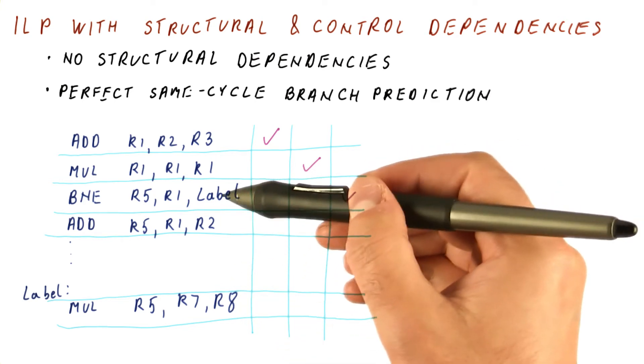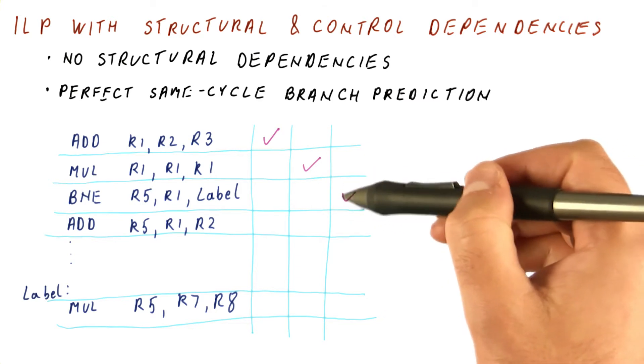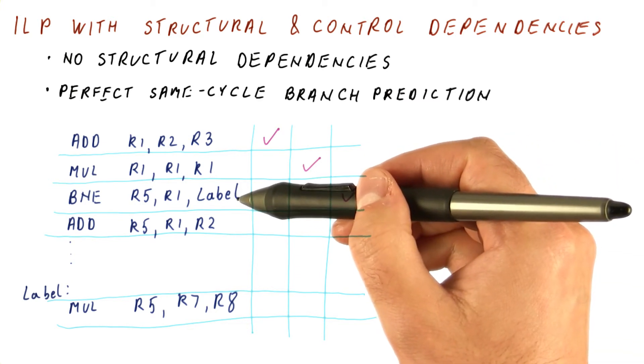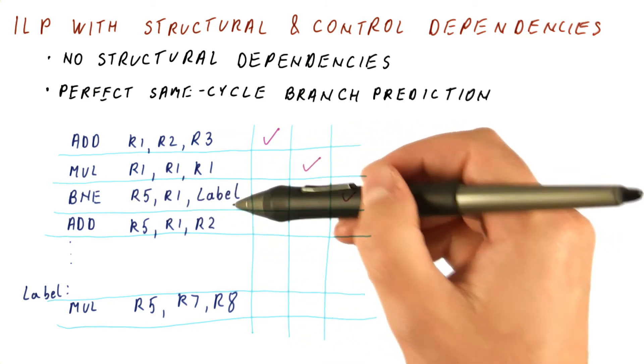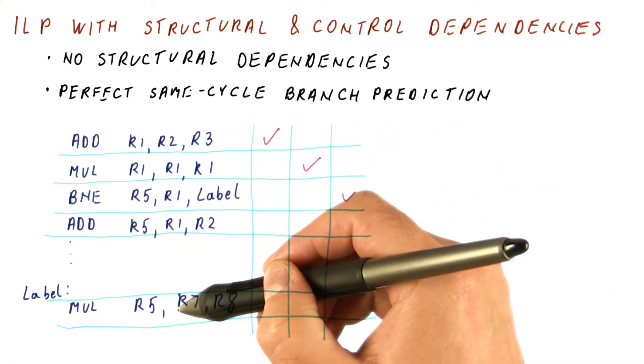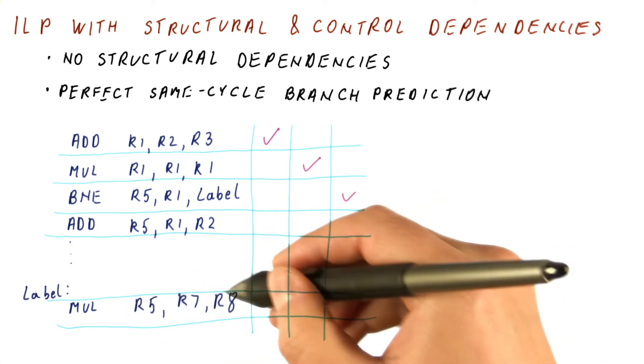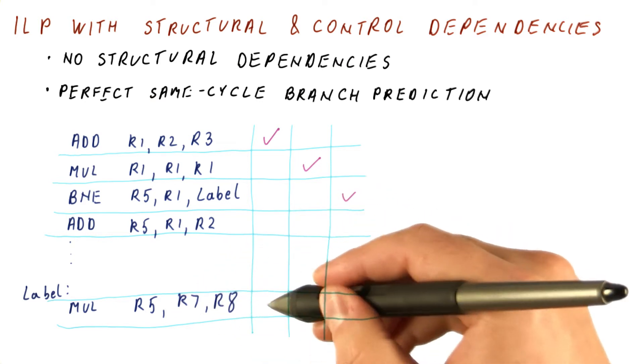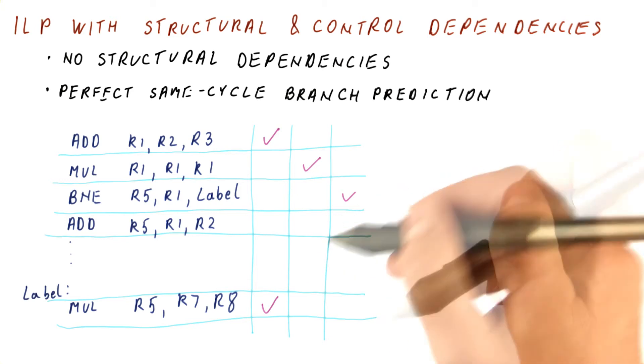What we can assume is that although the branch cannot execute until the third cycle, from the beginning, since we started fetching the program, we knew what the branch is going to do. So we knew that the branch is going to go to the label, and thus this instruction, because it has no data dependencies on any other instruction, will actually execute in the first cycle, although it has a control dependence.